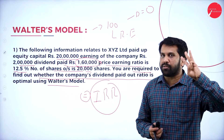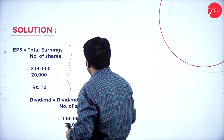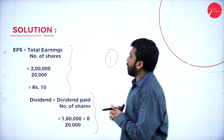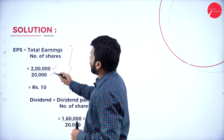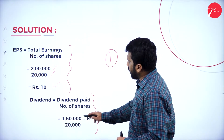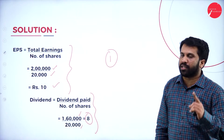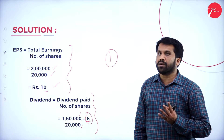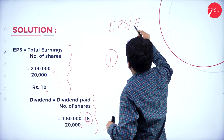Three formulas have to be applied. First, find out earning per share (EPS) and dividend. EPS = total earning divided by number of shares = 2 lakh divided by 20,000 = 10 rupees per share. Dividend per share = dividend paid divided by number of shares = 1 lakh 60,000 divided by 20,000 = 8 rupees per share. So earning is 10 rupees and dividend given is 8 rupees per share.